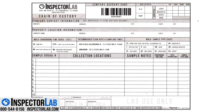A chain of custody is initiated when samples are collected. The collection details are recorded on the chain of custody and sent to the laboratory along with the samples taken. The transactions verifying that the samples were passed from you to Inspector Lab are detailed on the chain of custody by requiring a signature at each step of the process.